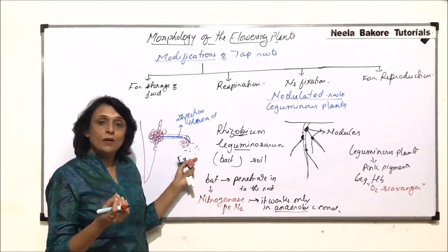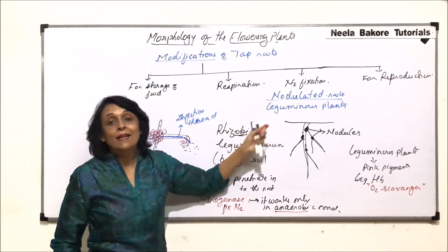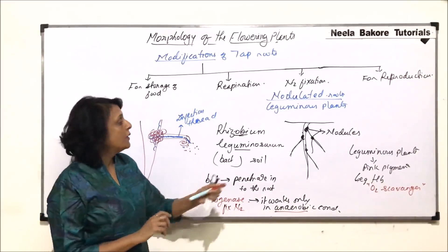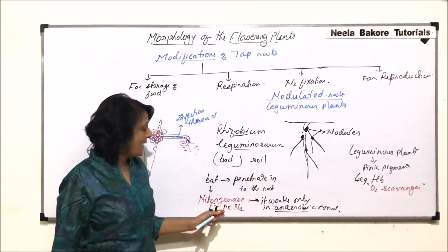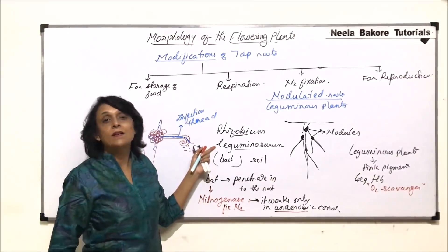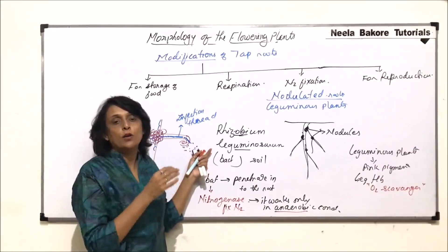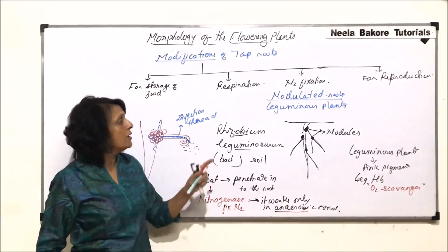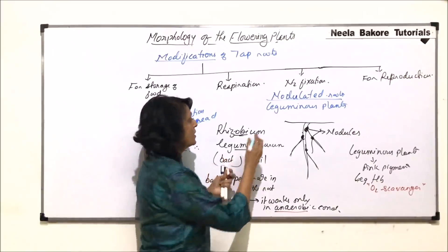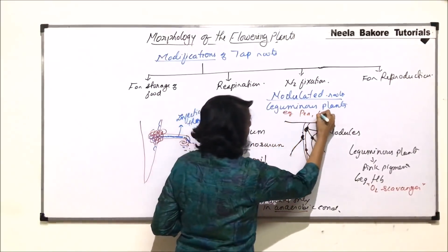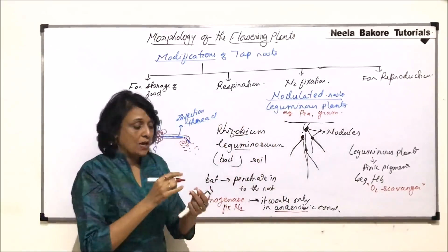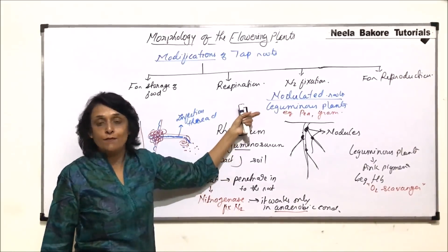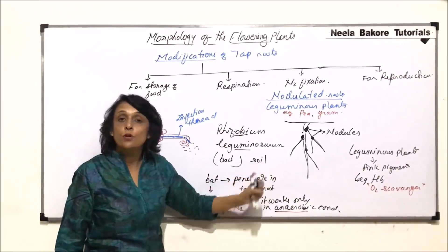So these two organisms, that is the bacterium and the leguminous plant, their association is symbiotic — both get benefited from each other. The plant gets the nitrogen which is fixed by nitrogenase, and the bacterium, that is Rhizobium, gets complete nourishment, protection, water, everything that it needs. So it is a mutually beneficial association which is known as symbiosis. It is a characteristic feature of leguminous plants; pea and gram are certain examples. Such roots help in nitrogen fixation, which is an additional function other than the normal function of absorption of water and minerals.